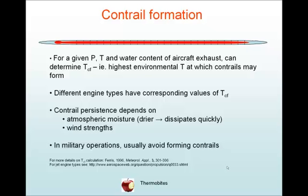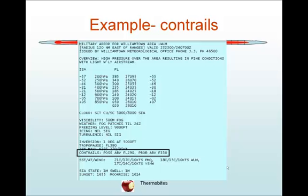In military operations they usually want to avoid forming contrails, so if you're ever posted to a military installation they'll be particularly interested in terms of their forecast briefing. For example, here's a military R4 for Williamtown in New South Wales, and you can see lots of different meteorological information — here we see possible contrails above flight level 290, which is 29,000 feet, and probable above 35,000 feet. The various techniques for forecasting contrails are best left to the operational environment.